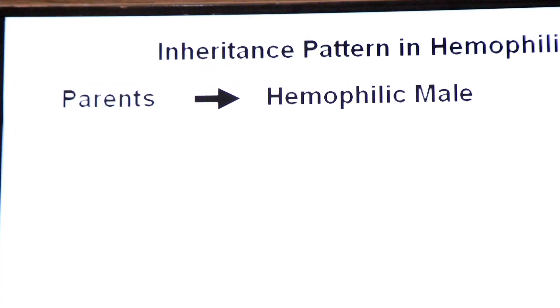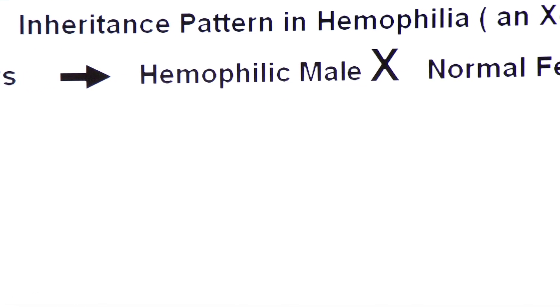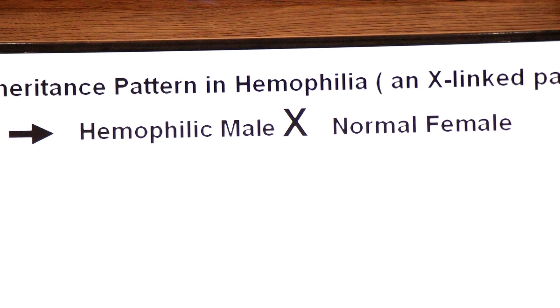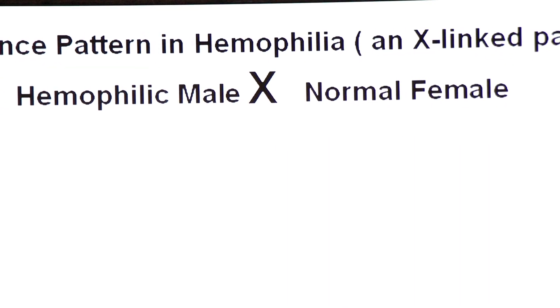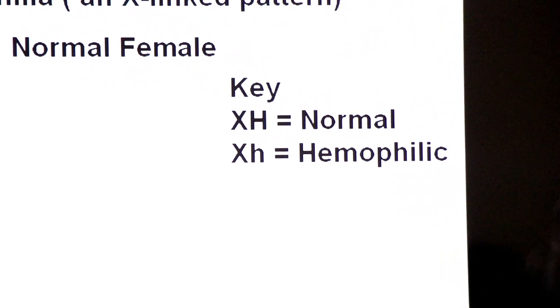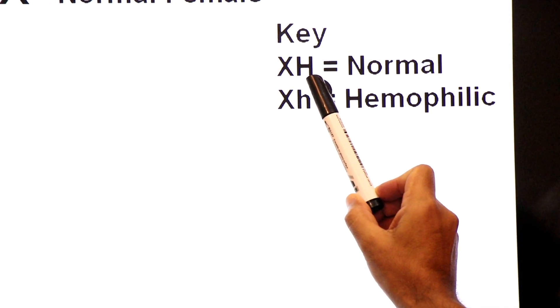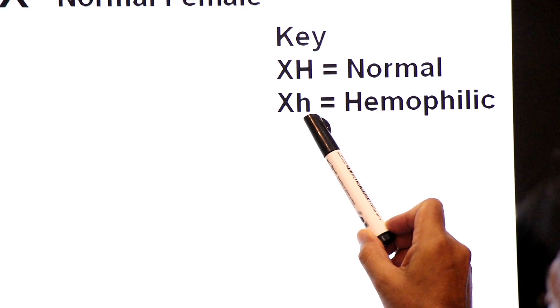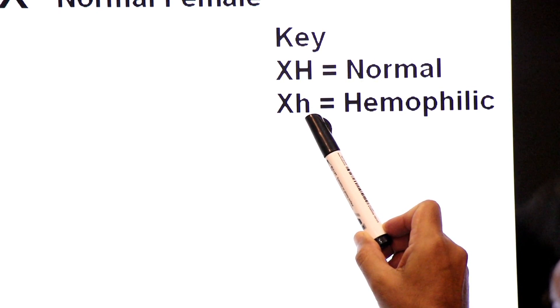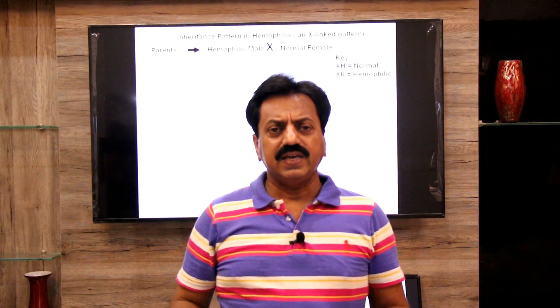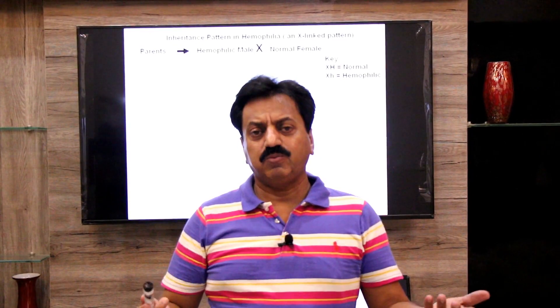Cross 1: If a hemophilic male is married to a normal female, what will be the proportion of hemophilia in their possible offspring? Sabse pehle aapko notation yaad karni paregi. X capital H is the normal allele for a normal person, but it is X-linked and caused by a recessive allele small h present on the X-chromosome. Capital H is for normal and small h is for hemophilic. Boys are hemophilic if they receive only one small h from their mothers.